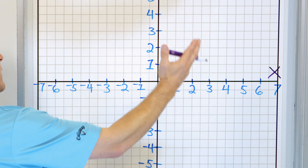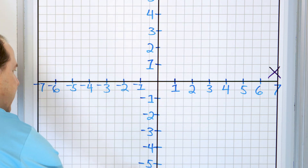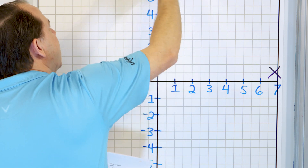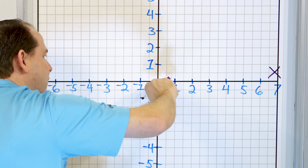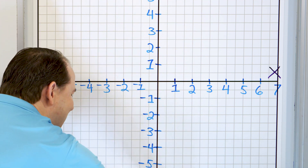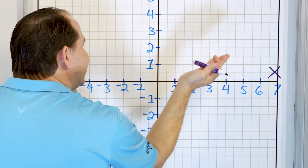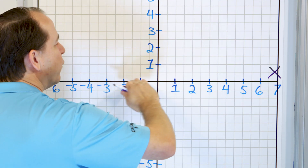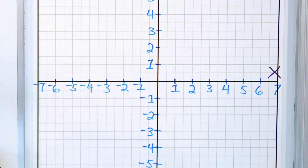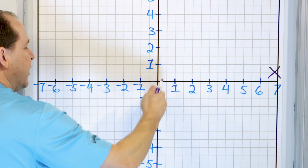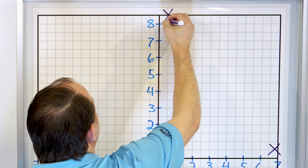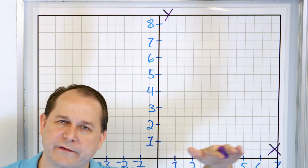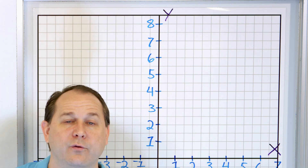Now let's create another number line that runs in the vertical direction. The positive numbers go up to positive infinity, and from zero going down they go to negative infinity. It's literally the same number line, just rotated to go up and down. So we now have two number lines: one going horizontally, which we call the x-axis, and another going vertically, which we call the y-axis.